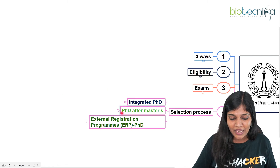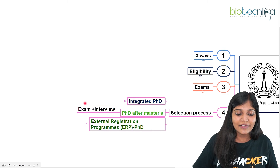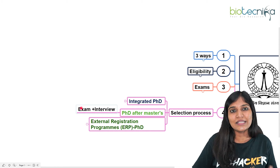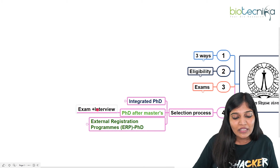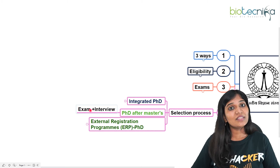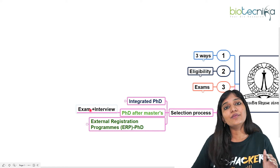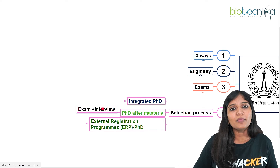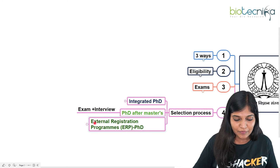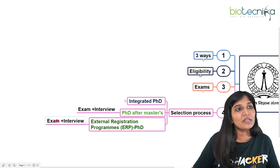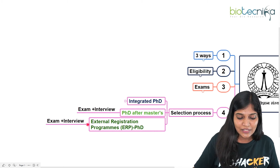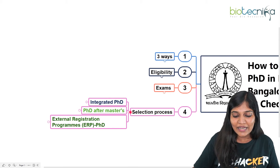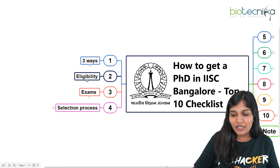For PhD after master's, you will be called for an interview only if you have a national level examination or DST INSPIRE provisional offer. Based on your performance in both, a shortlist is prepared. You can then attend interviews and, based on performance, be placed in a specific department. For External Registration, the same applies — national level exam score combined with interview performance determines selection.